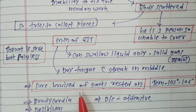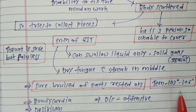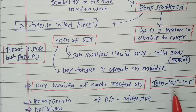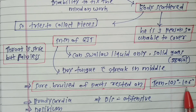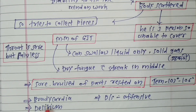Sore bruised feeling of the parts rested on is also seen, similar to Arnica. The temperature of the Baptisia patient is very characteristic in typhoid fever — ranging from 103 to 106 degrees Fahrenheit. In fever, there is also bradycardia.